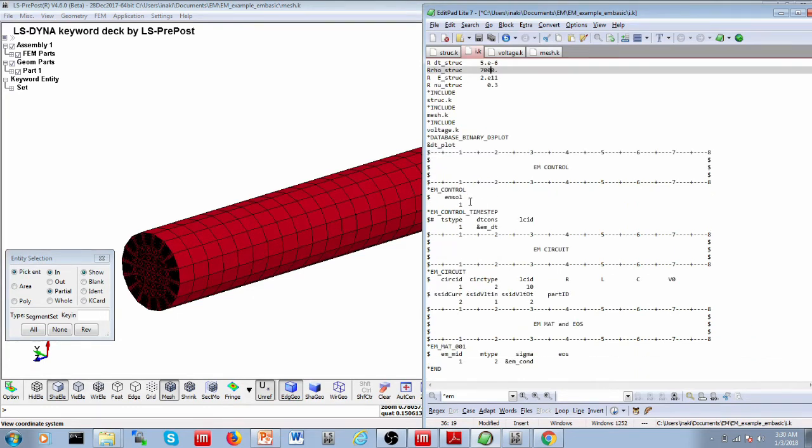So here we have our four EM keywords. So again we have our EM control, which we saw earlier, which turns on the eddy current solver. Then we have our EM time step definition. So we have two time steps now, one for solid mechanics and one for electromagnetics. And we make sure that our electromagnetic time step is at least as high as the solid mechanics time step.